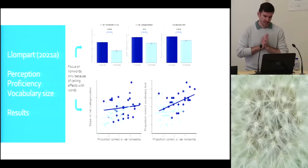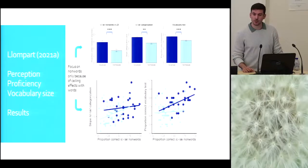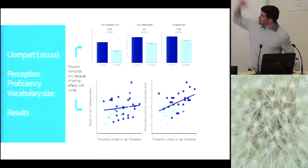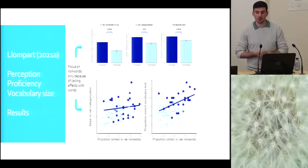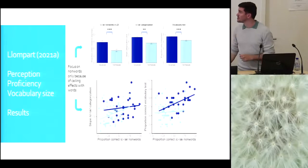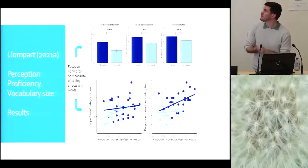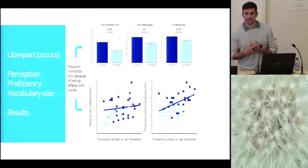These are the results. First of all, let me say that I focused on non-words only because for real words, there were ceiling effects. Both groups were very good at accepting real words as real English words. But for non-words, what you can see here on the upper tier is that the advanced learners outperformed the intermediate learners in all three tasks, which is not that surprising, but at least it's a nice sanity check for the grouping I chose. And then below you see the scatter plots with proportion of correct number rejection on the x-axis and then categorization slopes and proportion correct for the vocabulary test. You have the two groups in different colors as above. And what you can see is that perception matters more for the intermediate learners. Vocabulary size matters more for the advanced learners. And this crystallized as significant interactions in the mixed effects model between perception and proficiency and vocabulary and proficiency in opposite directions.